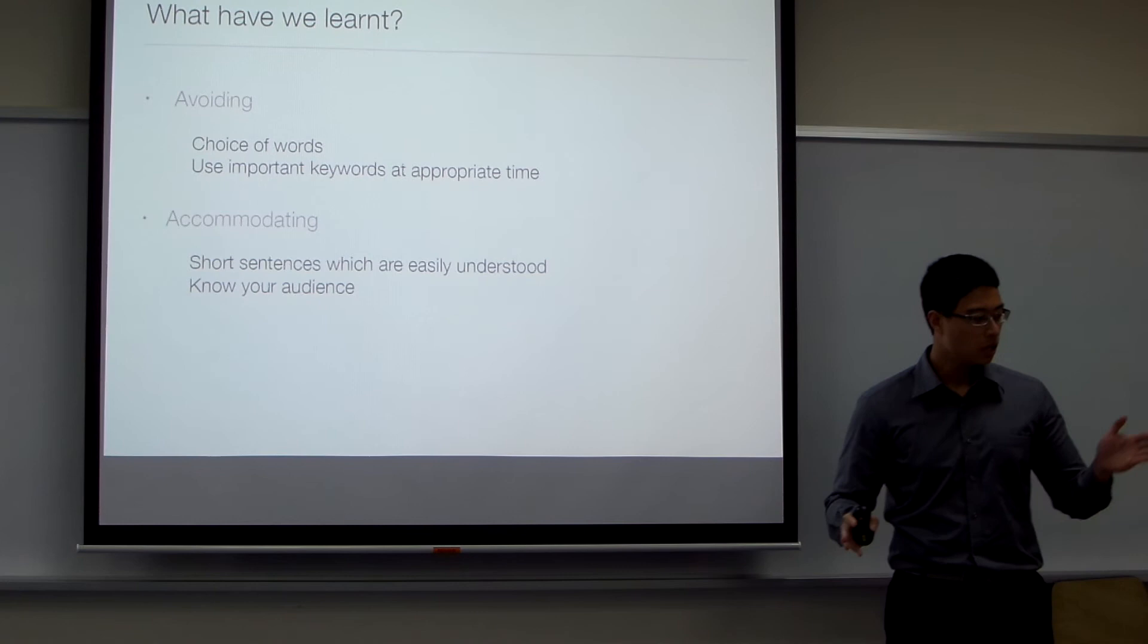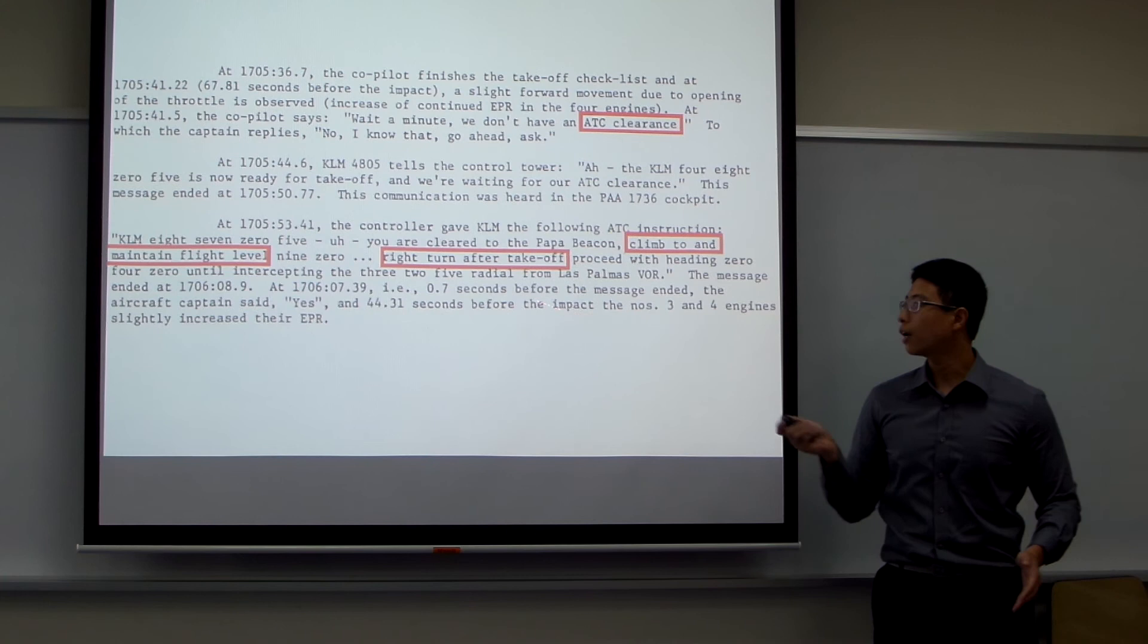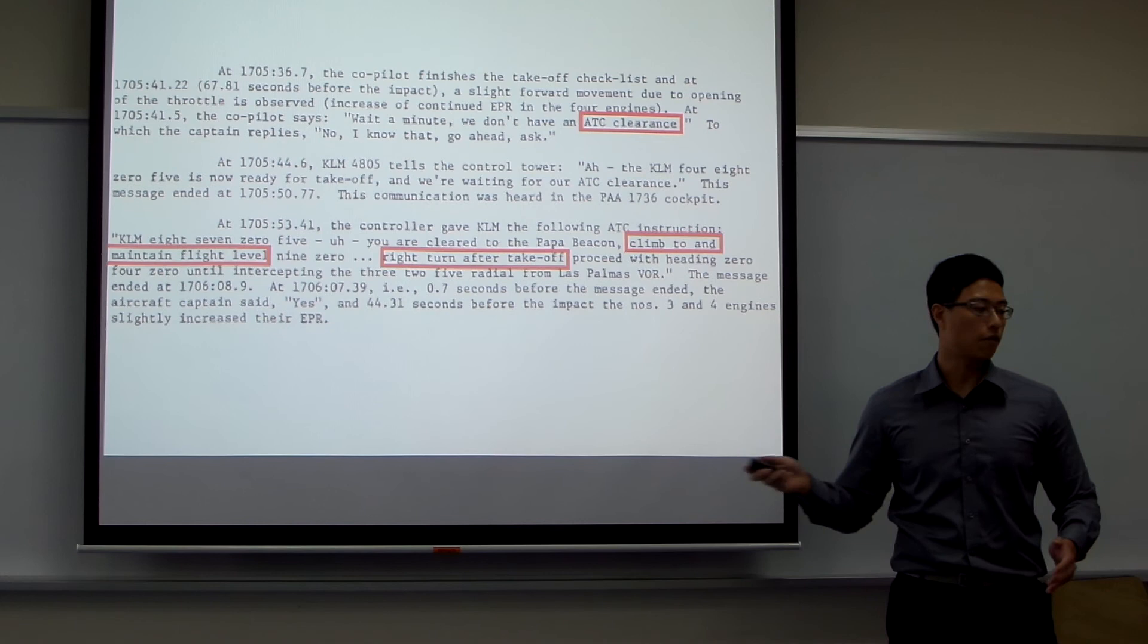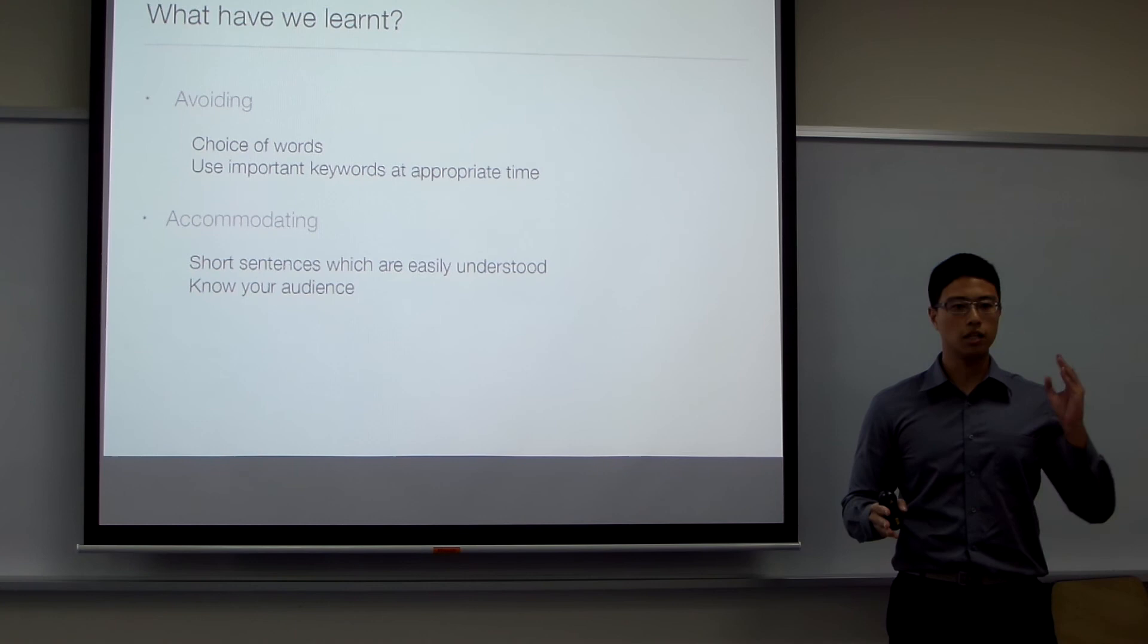Next is accommodating. As you can see, the communication between the ATC and the KLM is pretty long - for example, 'Papa Alpha, climb to and maintain flight level,' et cetera - which is very long. So it would be better if the air traffic controller uses shorter sentences that the pilot could take notice of.